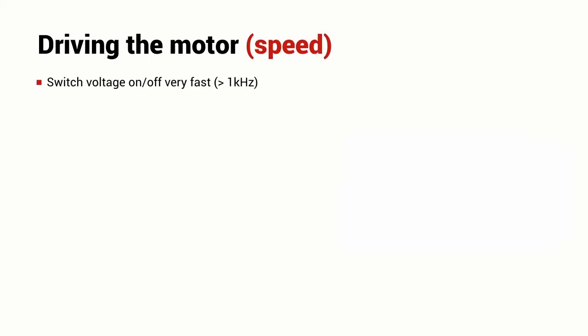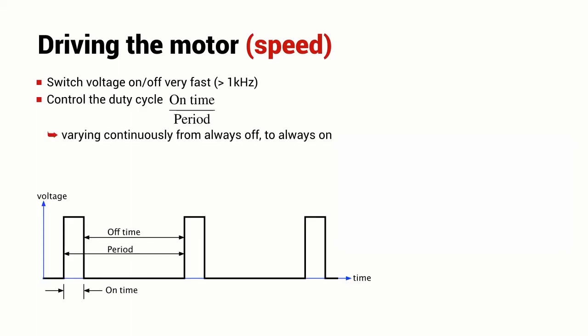Now one of the advantages of these electronic FET switches is that we can turn them on and off very quickly. The voltage that's applied to the motor can be the maximum value for a time period which we refer to as the on time and there can be zero for what we refer to as the off time.